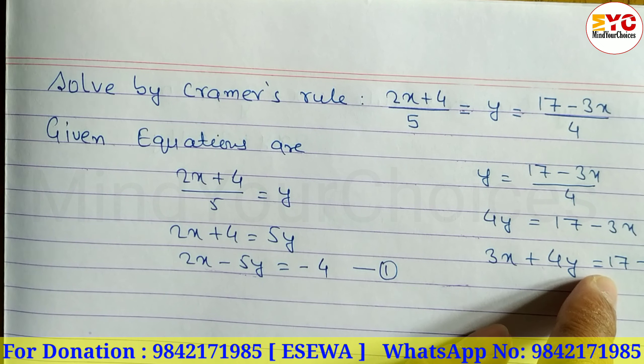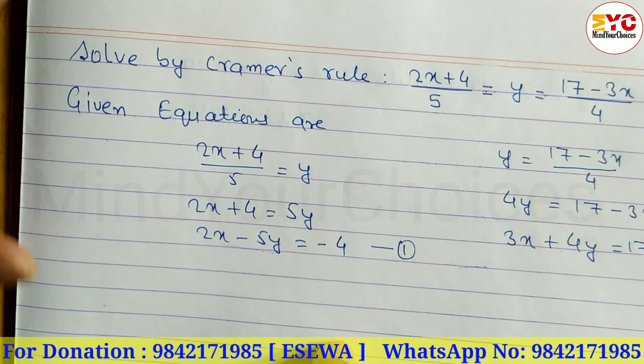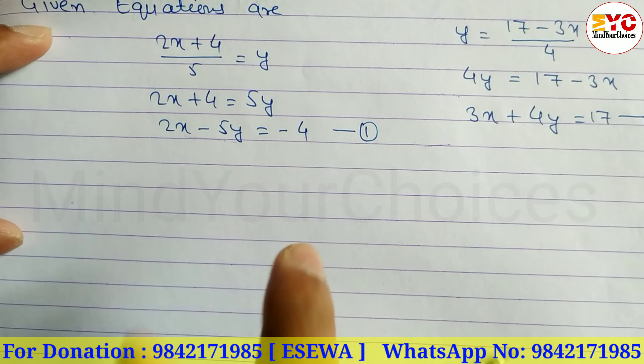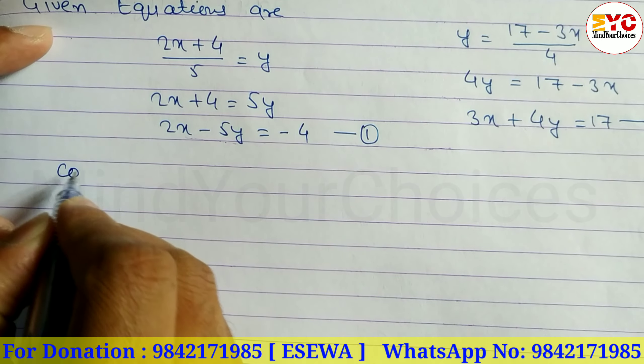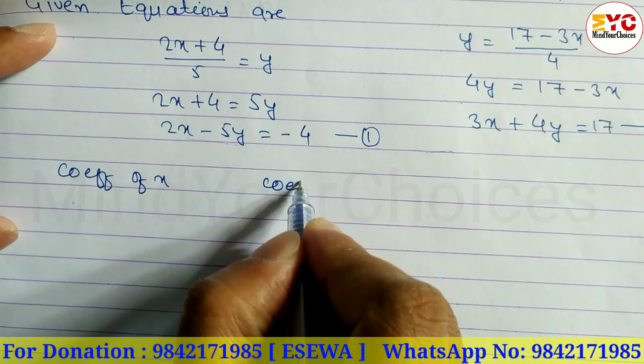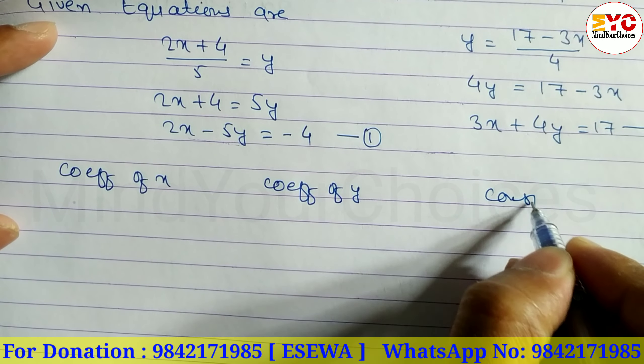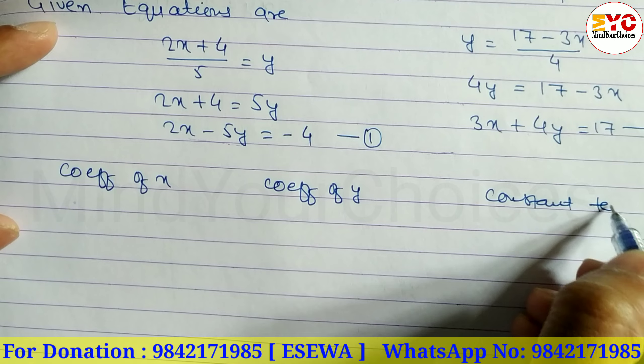Hope you understand how to write. After this we have to write down coefficient of x, coefficient of y, and constant number. Here we have to write down coefficient of x, here coefficient of y, and here the constant term.